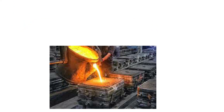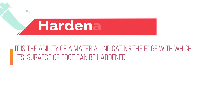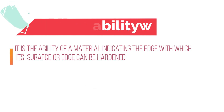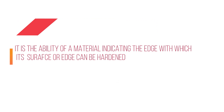The last property is hardenability. Hardenability is the ability of a material indicating the ease with which its surface or core can be hardened by a suitable process of heat treatment. In the case of plain carbon steel, the achievable degree of hardness depends upon the carbon content in its composition. These are all the important properties of material. Thank you for watching — I hope this content is helpful. If you would like to watch more technical videos, please subscribe to our channel and share with your friends.